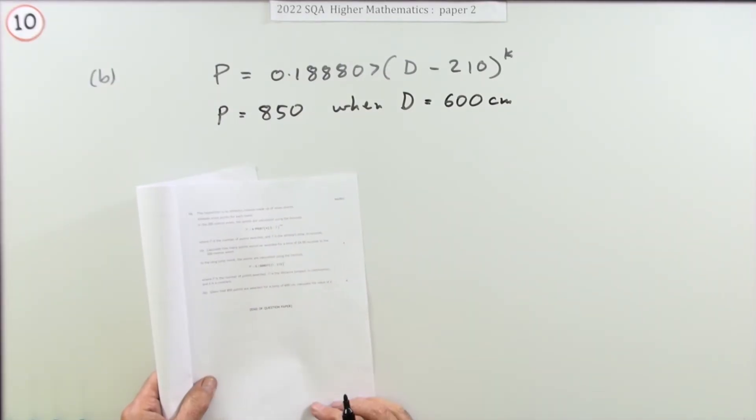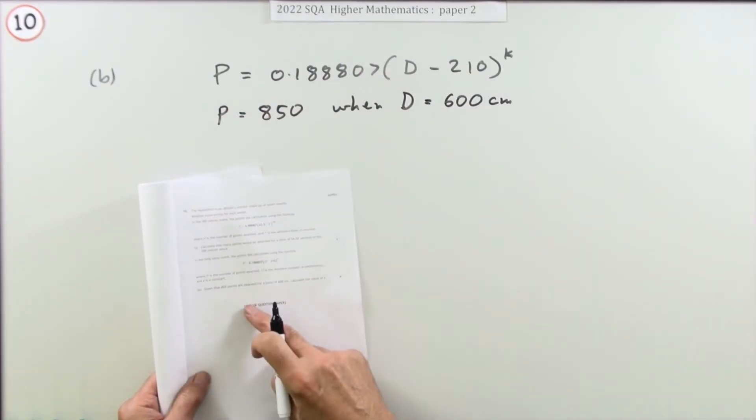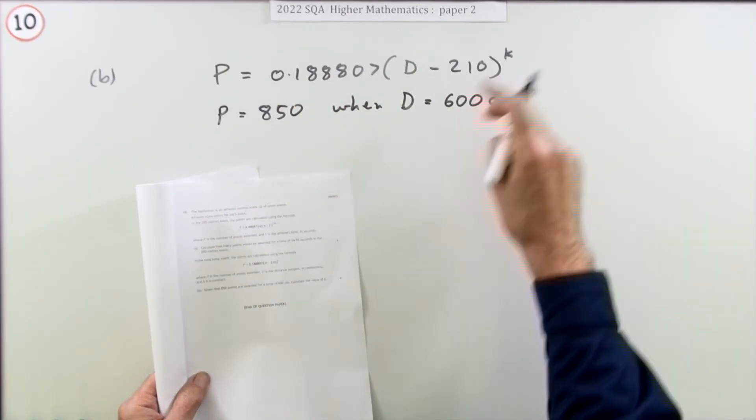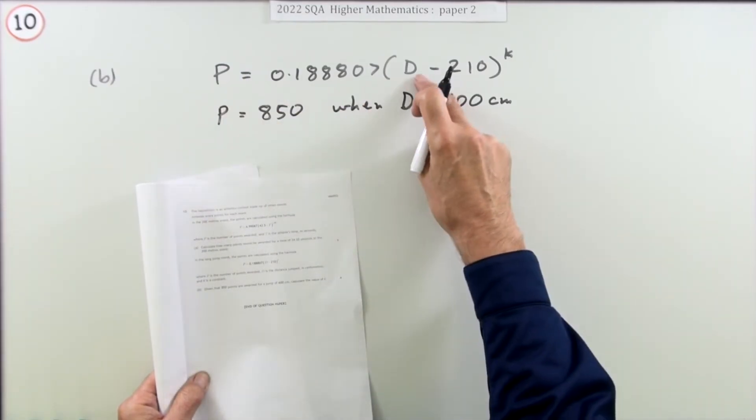Part B, for four marks, is just the same again, only it's a different event this time—the long jump. The points are given by this expression, only this time you know P, you know D, and you find that index, the power that's involved.